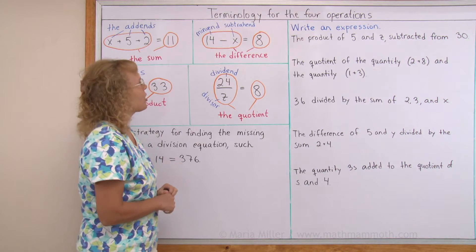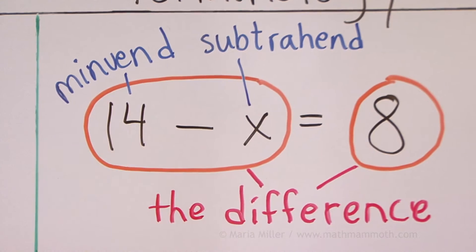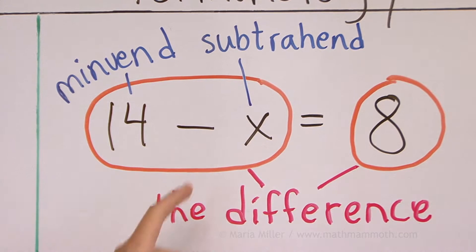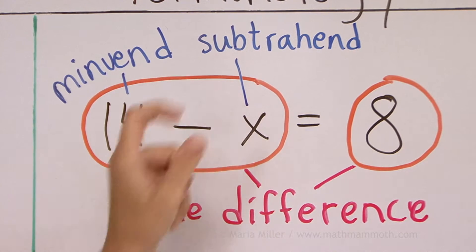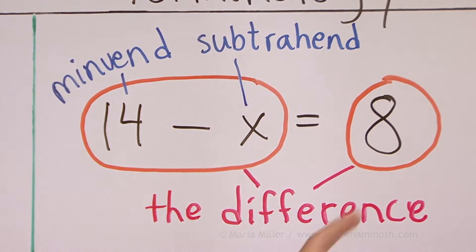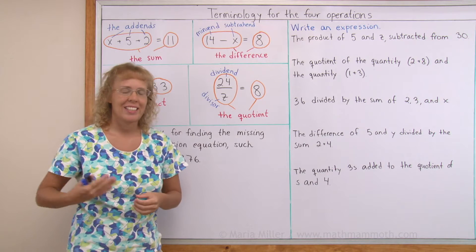Then in subtraction, the number we subtract from is the minuend, and the number we are subtracting is the subtrahend. The answer is called the difference. But also, this subtraction expression, this 14 minus x, is also called the difference. It is the difference of 14 and x.